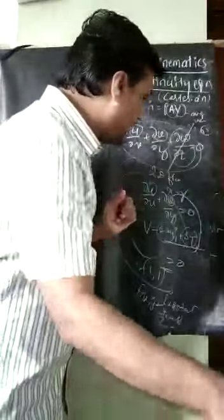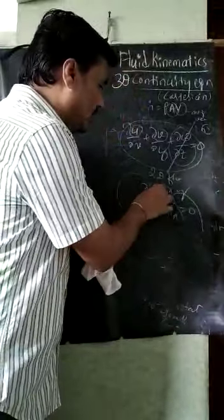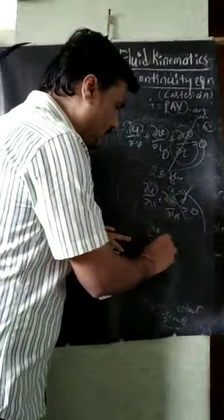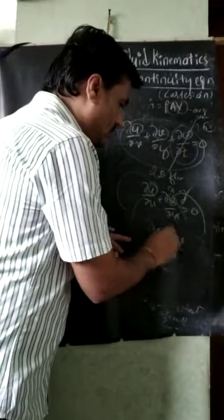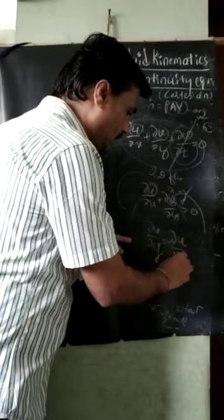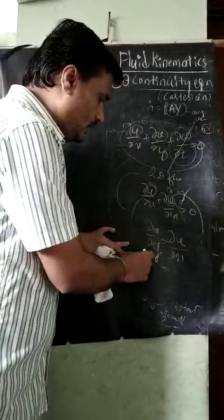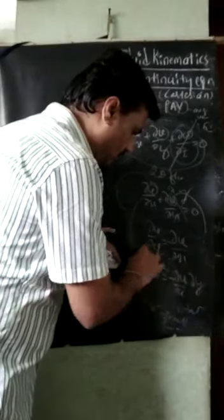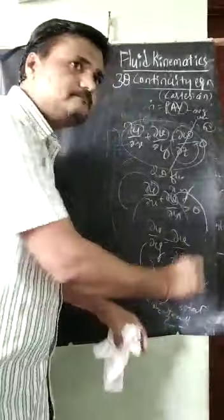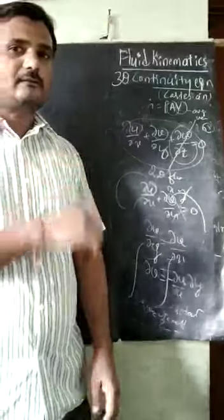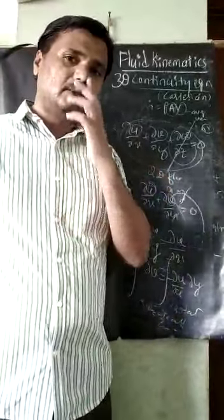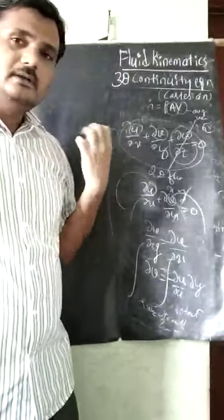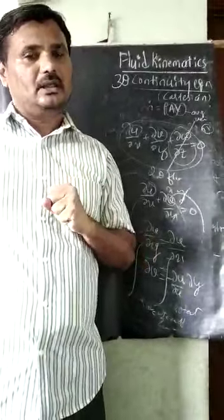Sometimes in a numerical, for a 2D flow, they will give u and ask to find v. What you do is: ∂v/∂y = −∂u/∂x. To get v, integrate: dv = −(∂u/∂x) dy. By integrating, you get the v value. So one velocity component will be given, and another has to be found by applying this 3D continuity equation. These are the kinds of numericals asked on the continuity equation.